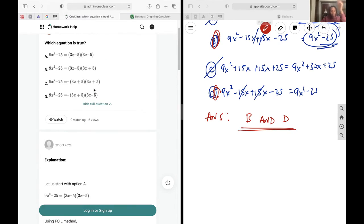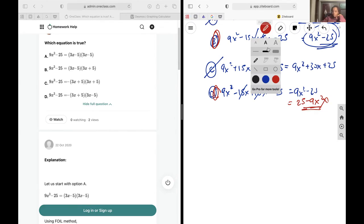Oh, but you need to be careful with D here. You see, it's easy to miss this minus sign that they've placed in front of it, and the minus sign is going to change it. In fact, it'll become 25 minus 9x squared, which is not what we're looking for. So the only correct answer is going to be B.